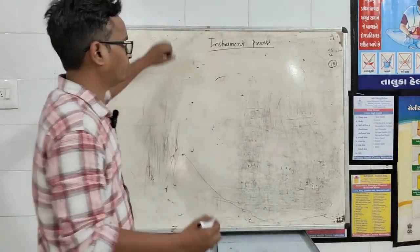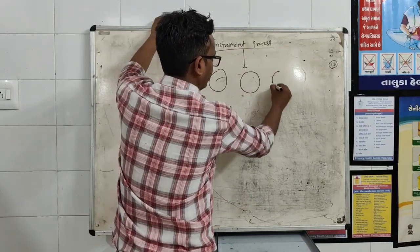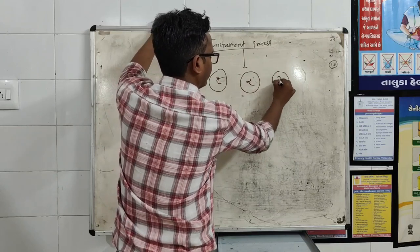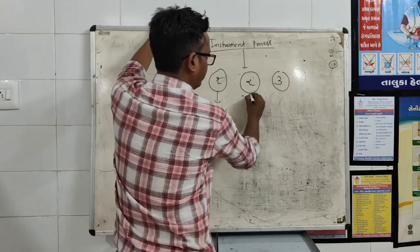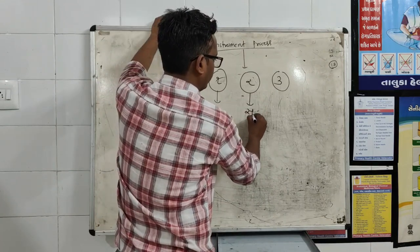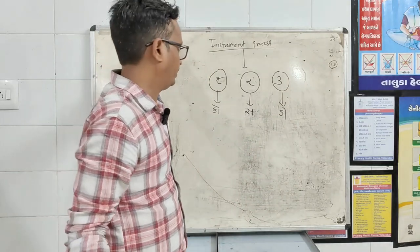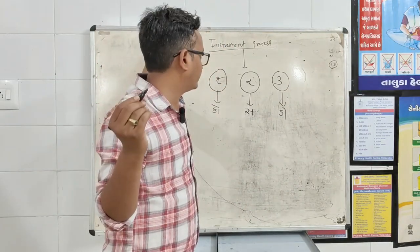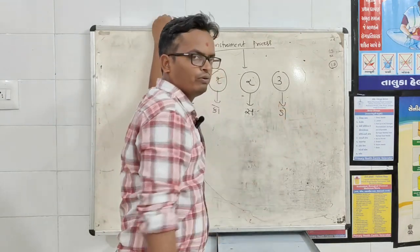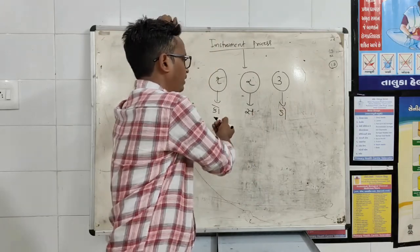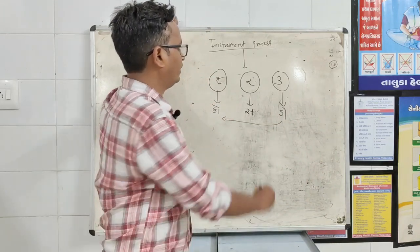Now we can understand instrument processing. When we use instrument process, we keep 3 buckets: bucket number 1, bucket number 2, and bucket number 3. Remember the method called DISCO. We also had the same DISCO in the instrument cleaning. We have to follow this.